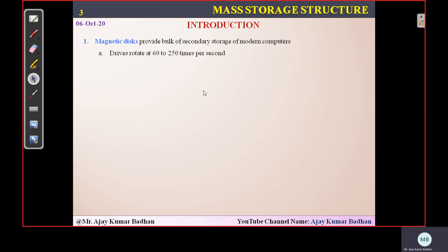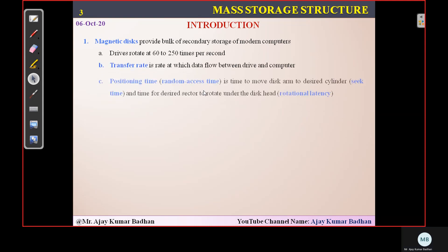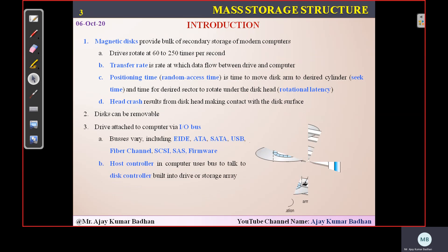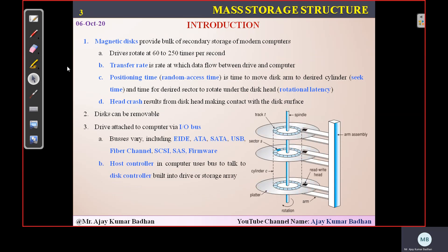Let's begin with the overview of mass storage structure, starting with the magnetic disk. The magnetic disk is the bulk of storage for modern computer systems like laptops. The capacity of secondary storage has evolved from MBs in traditional systems to GBs and now TBs.